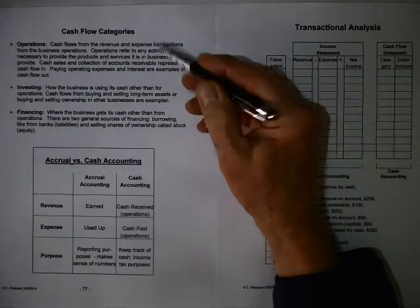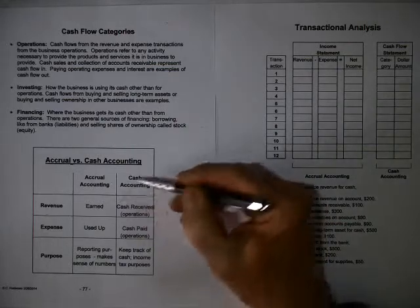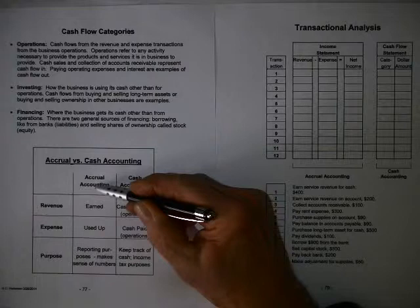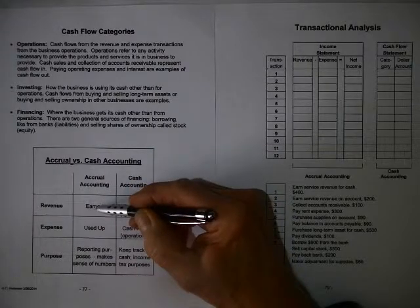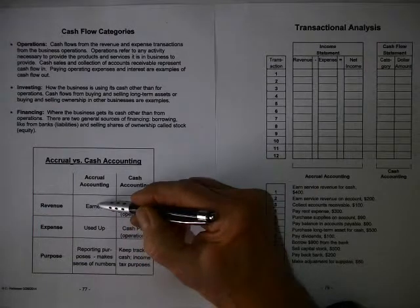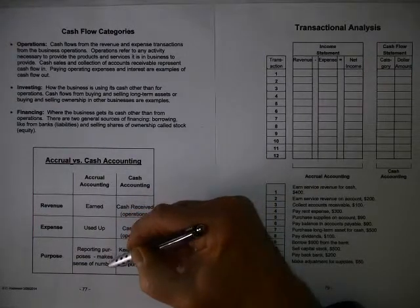So we want to now contrast our cash accounting and our accrual accounting. Now up to this point we've been dealing with the accrual accounting and the income statement and the balance sheet are made using the accrual system of accounting because it makes sense of the numbers to the owner.